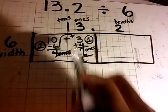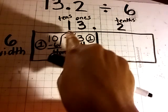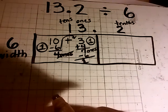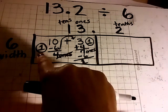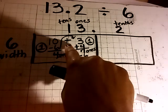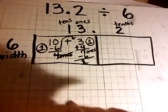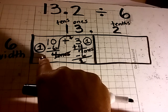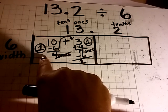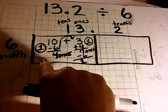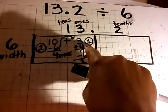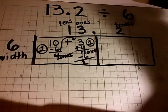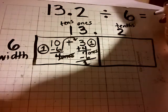Now because we decomposed the 13 into 10 plus 3, we must add 1 plus 1 because we had 1 group of 6 in 10 plus 1 group of 6 in 7. So we have 2 whole.